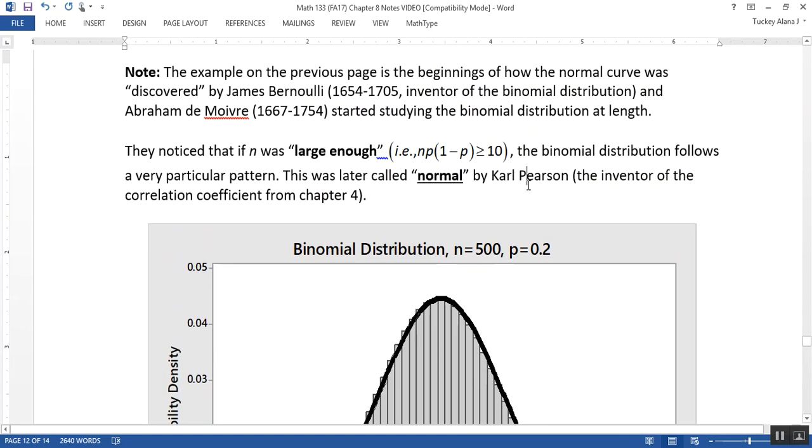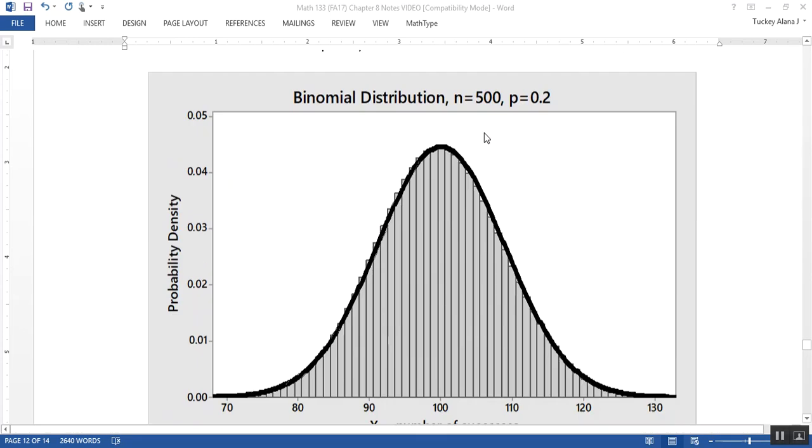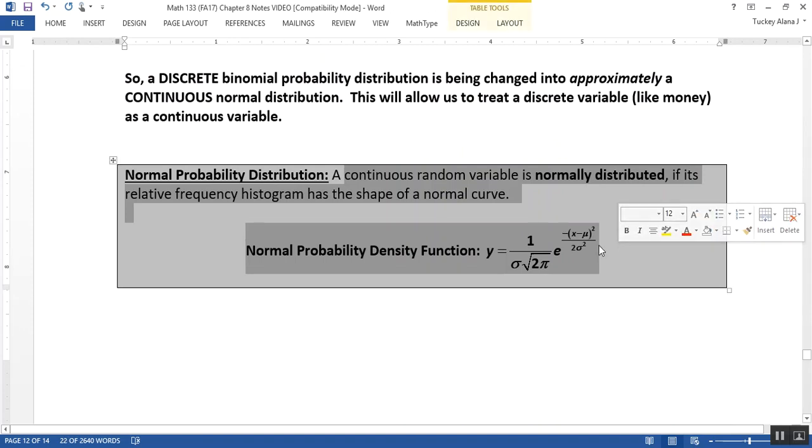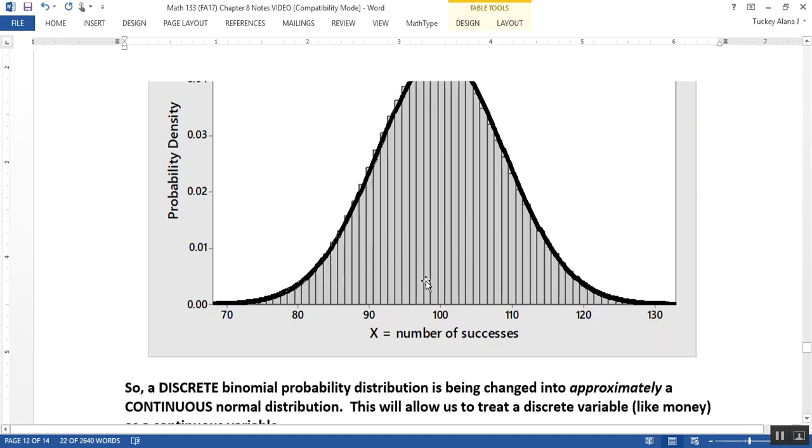It's not alone in that. Lots of things will be treated with the normal curve that Bernoulli and de Moivre discovered. Carl Pearson, the guy that invented the correlation coefficient from chapter four, is the one that first called it normal. And in case you're interested, this is the function for it, believe it or not. You would have to type that into a calculator to get it to graph that lovely normal curve.